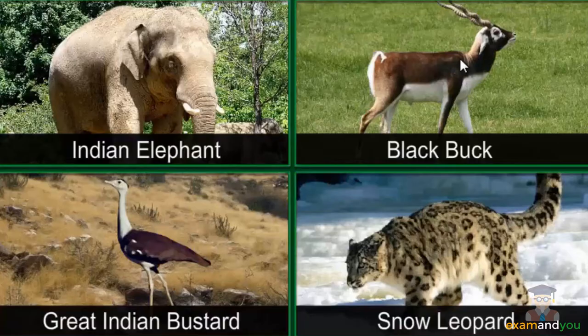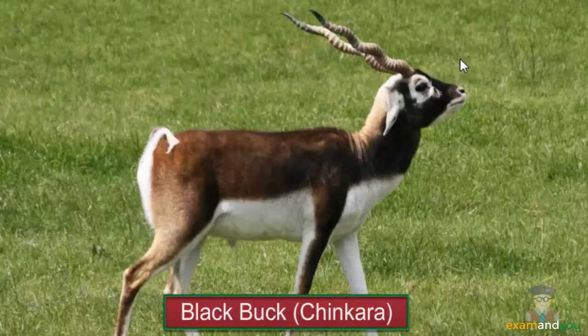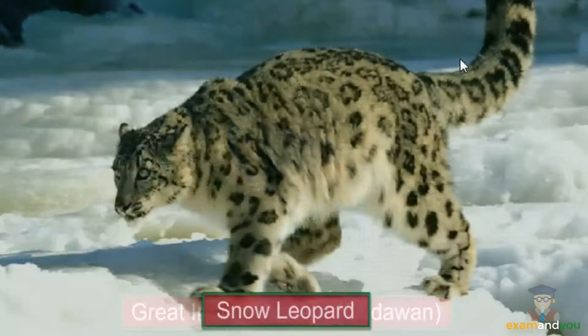Recently, several other animals have been included in the list of protected animals, with a legal ban on their hunting and trade. These include the Indian elephant, the black buck or chinkara with its beautiful spiral horns, the Great Indian Bustard, and the Snow Leopard.